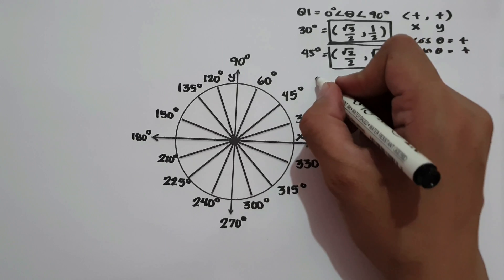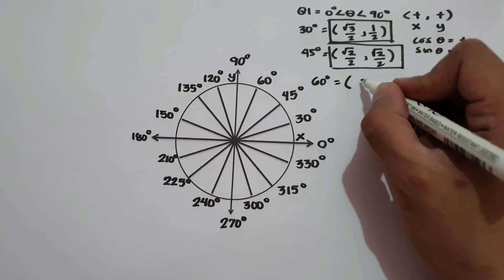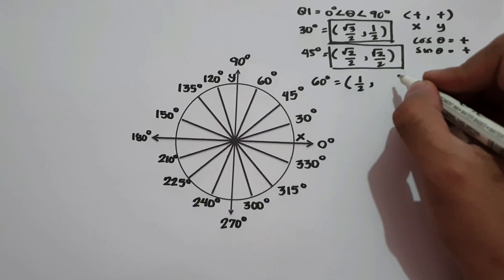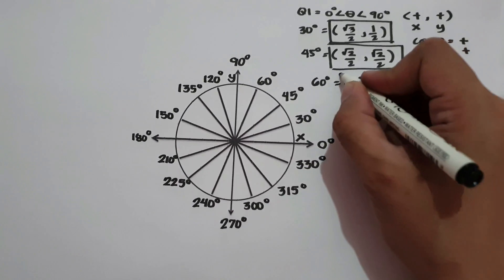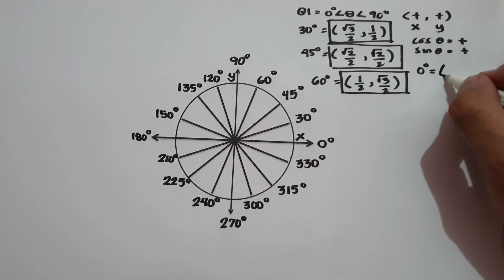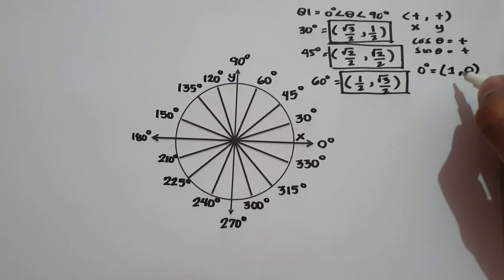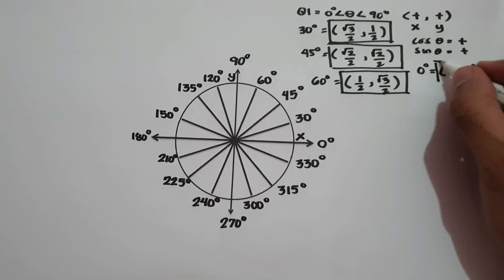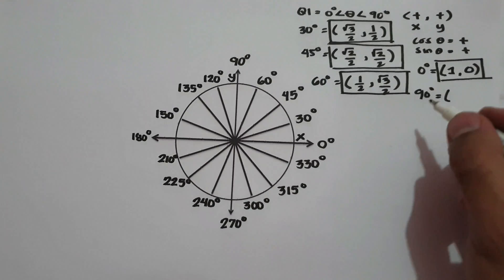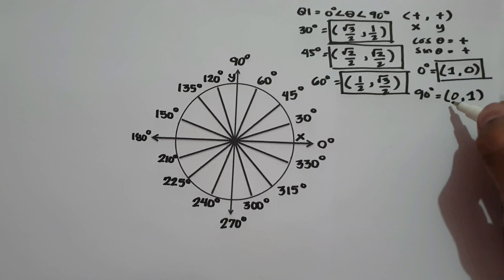What about 60 degrees? 60 degrees is in quadrant 1, and the reference angle is also 60 degrees. Cosine 60 degrees is 1 half, and sine 60 degrees is square root of 3 over 2. That is the coordinates of 60 degrees. How about 0 degrees? Cosine 0 is 1 and sine 0 is 0, so the coordinates of 0 degrees are (1, 0). How about 90 degrees? Cosine 90 is 0 and sine 90 is 1, so the coordinates of 90 degrees are (0, 1).